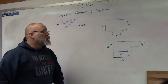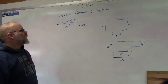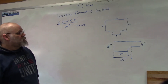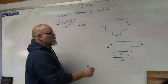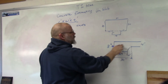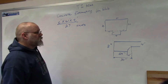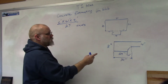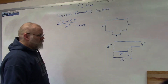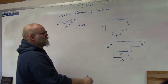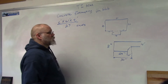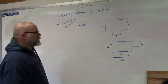In this concrete estimating, we're going to do a unislab. A unislab is where they pour the footings and the slab at the same time — they don't pour them separately. So we're going to figure out how much concrete it's going to take to pour this structure right here.